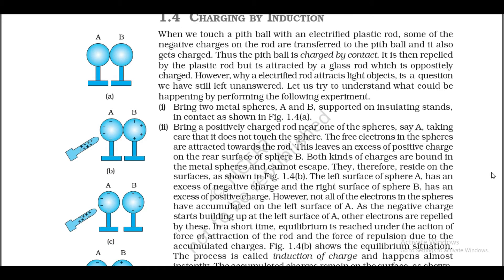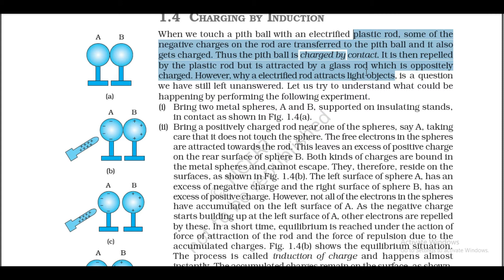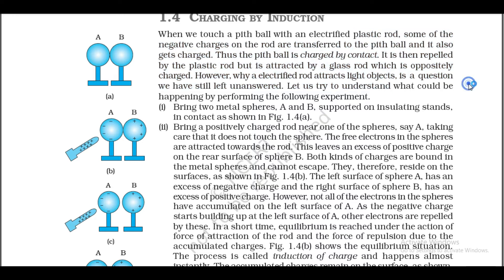1.4 Charging by Induction. When we touch a pith ball with an electrified plastic rod, some of the negative charges on the rod are transferred to the pith ball, and it also gets charged — the pith ball is charged by contact. It is then repelled by the plastic rod but is attracted by the glass rod which is oppositely charged. However, why an electrified rod attracts light objects is a question we have still left unanswered. Let us try to understand what could be happening by performing the following experiment.